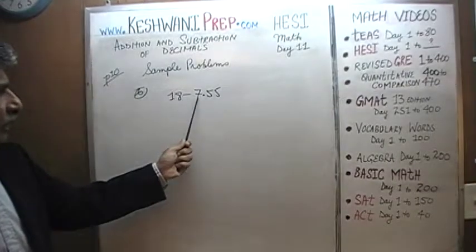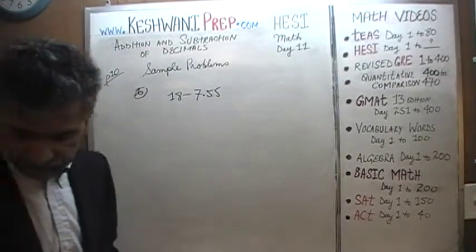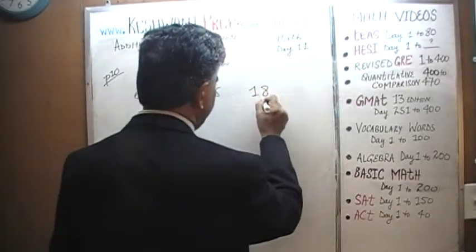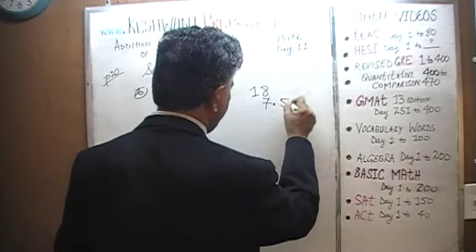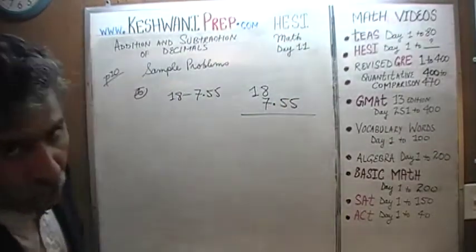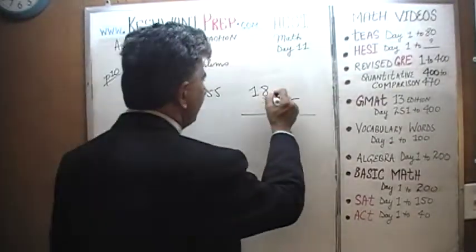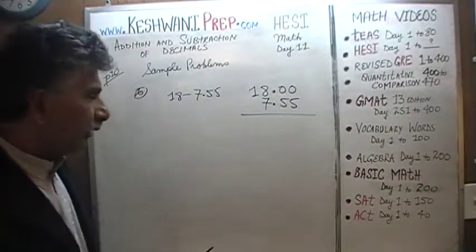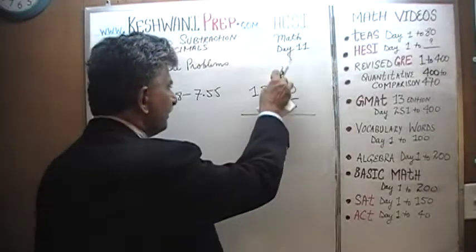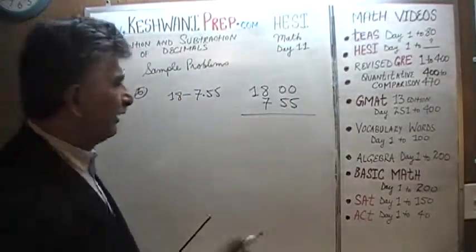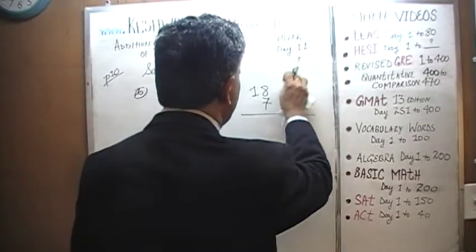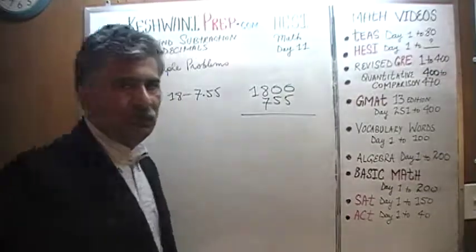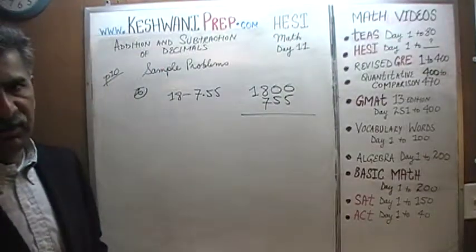The problem is only on the blackboard. We are being asked to subtract 7.55 from 18. See what we can do here. Here is our 18, here is the 7.55. It is a little awkward because if you put a decimal here and try to work like that, it's going to be more awkward to deal with. Forget the decimal for the time being. Pretend it is 1800 minus 755. We will deal with the decimal at the very end.